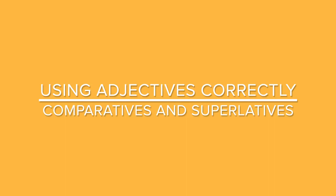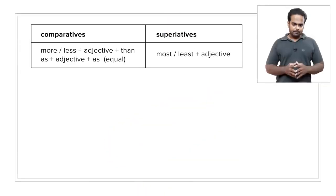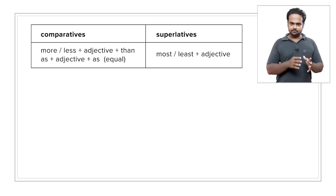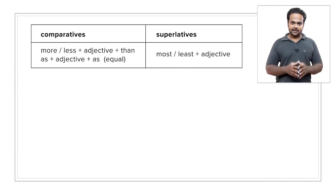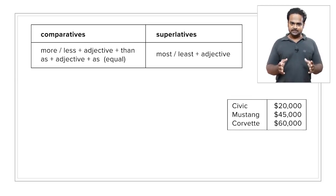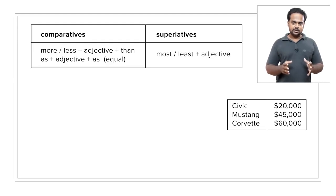Let's now turn to the second area where mistakes are very common — comparatives and superlatives. These are words that help you compare nouns: people, places, animals, things, etc., and we do that using adjectives. Comparatives appear in the form more or less plus an adjective plus than, or as plus adjective plus as — meaning the two nouns being compared are equal. Superlatives appear as most or least plus adjective. To understand these, we'll take the example of the Honda Civic at $20,000, the Ford Mustang at $45,000, and the Chevrolet Corvette at $60,000, and compare them using the adjective expensive.